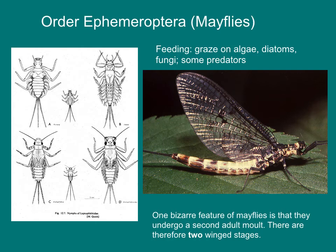Mayflies are also large insects with aquatic juvenile stages. They emerge from streams and rivers in vast numbers and can cause massive traffic jams when they emerge in cities like St. Louis. Adults live for a very short period of time — a day at most. Most of their life is spent as an aquatic juvenile in a stream or river.